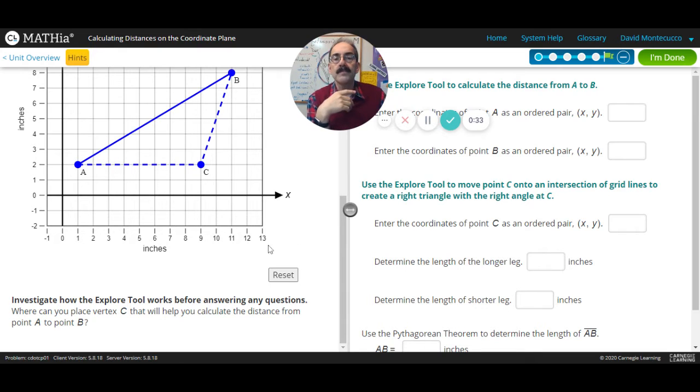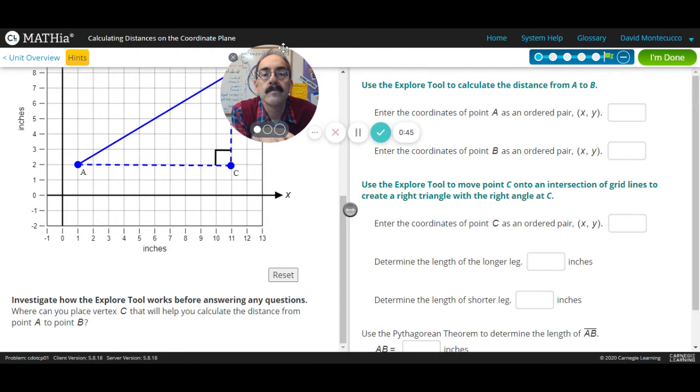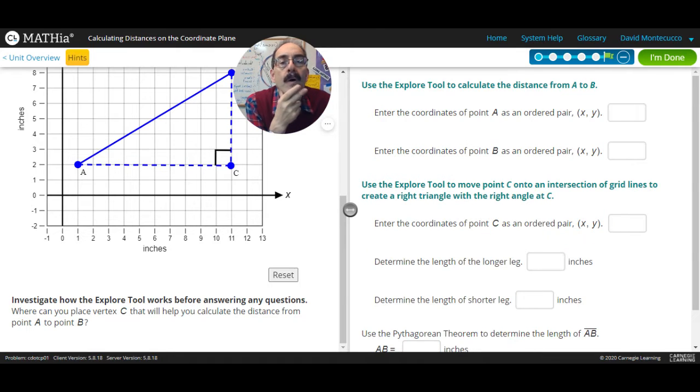Okay, so rise over run. We're going to drag this baby over here. We're going to make it straight up and down, and we just count and count. Let's move our little head guy here. All right, so now enter the coordinate point of A, 1, 2.